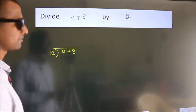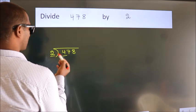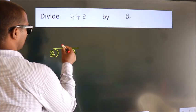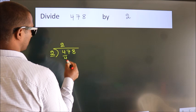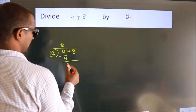Next. Here we have 4, here 2. When do we get 4? In 2 table, 2 2s, 4. Now we should subtract. We get 0.